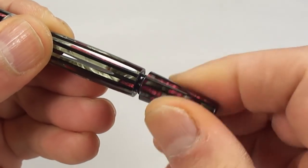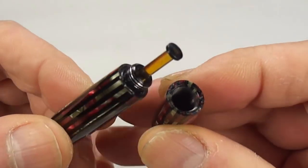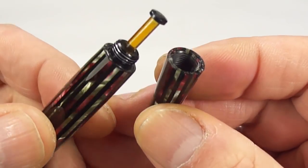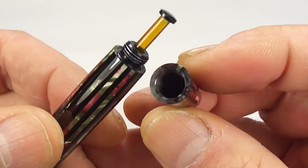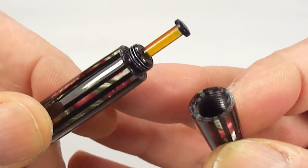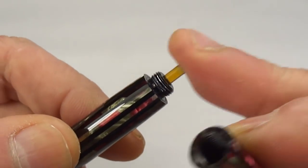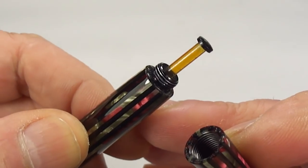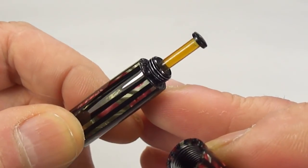So what that means is we simply unscrew the blind cap like so, there. Okay, you can see you've got the blind cap to our right there, and to the left we've got the pen with this sort of, well, yeah, a button. Not so much a button, it's the plastic sort of filler.